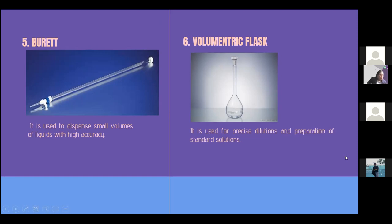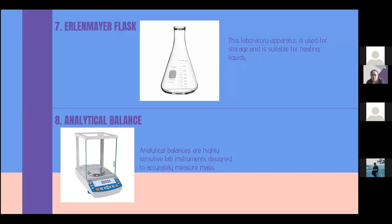For the next one is the Erlenmeyer flask. This laboratory apparatus is used for storage and is suitable for heating liquids. It is a flask having a wide base, narrow neck, and conical form convenient in laboratory experimentation for swirling liquids by hand. Number eight is the analytical balance. Analytical balances are highly sensitive lab instruments designed to accurately measure mass. They are meant to detect very fine increments so they are very sensitive. The slightest vibration or breeze can impact the results. Analytical balances should be used in a dedicated room with as few disturbances as possible.